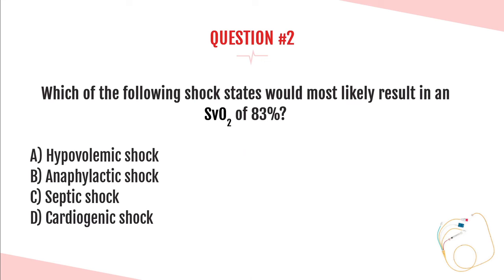Question number two: which of the following shock states would most likely result in an SVO2 of 83%? A: hypovolemic shock, B: anaphylactic shock, C: septic shock, or D: cardiogenic shock? The answer is C, septic shock.